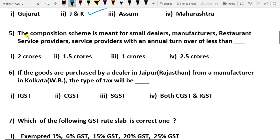Question 5: The composition scheme is meant for small dealers, manufacturers, restaurants, and service providers with an annual turnover of less than 1.5 crores. So the composition scheme is applied for persons or service providers whose annual turnover is less than 1.5 crores.